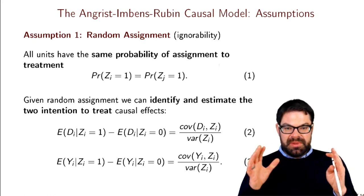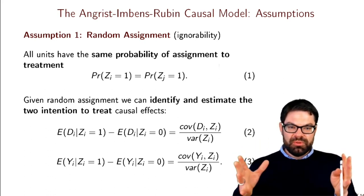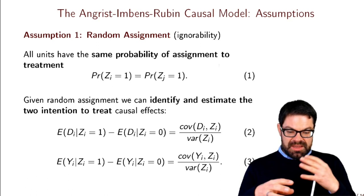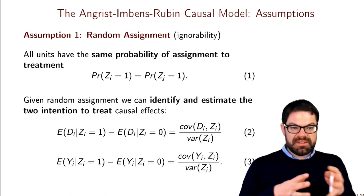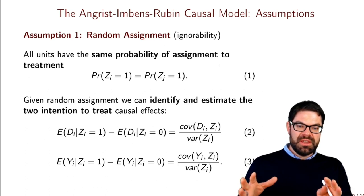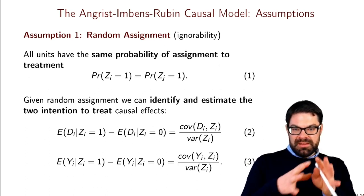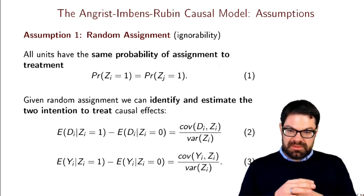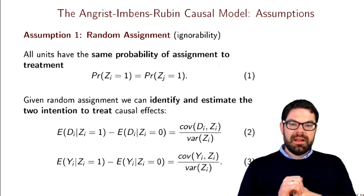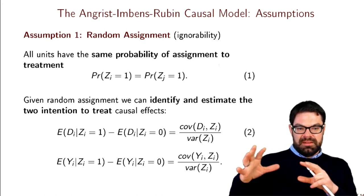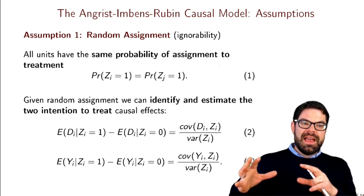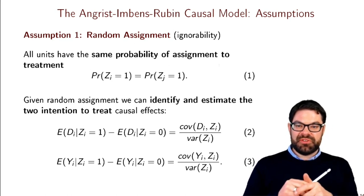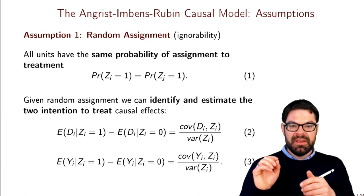The workaround is to compare people who did serve to those who did not, using the draft eligibility status as an instrument. To understand the causal parameter the IV estimator identifies, we need to focus on potential outcomes for each individual. The potential outcomes are a person's earnings given their draft eligibility status, with versus without serving in Vietnam.